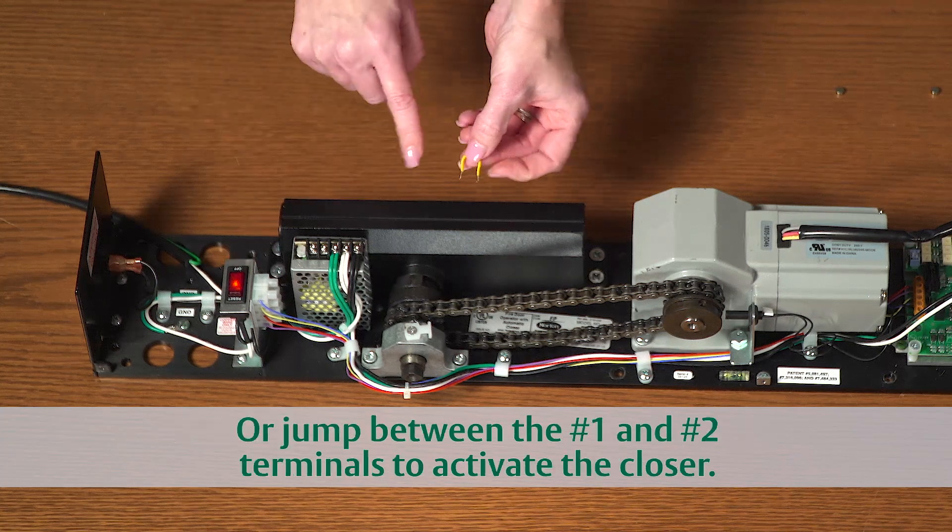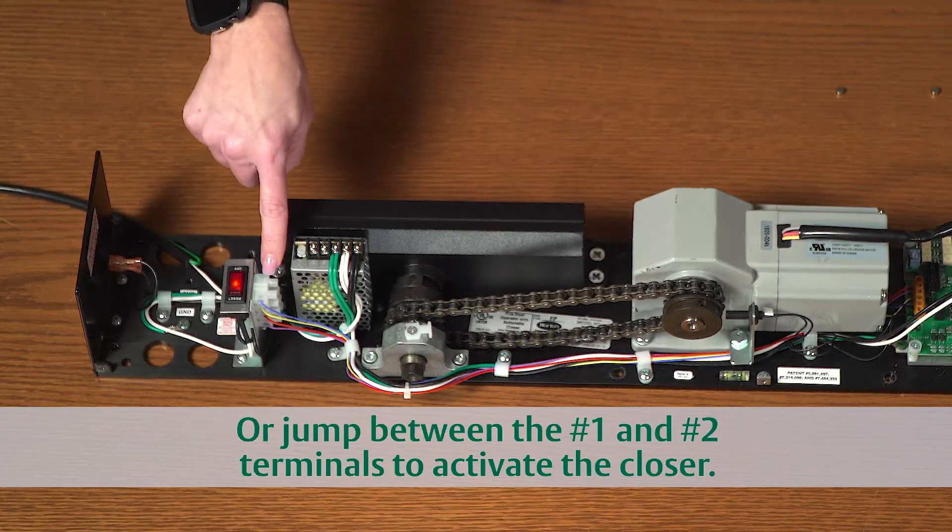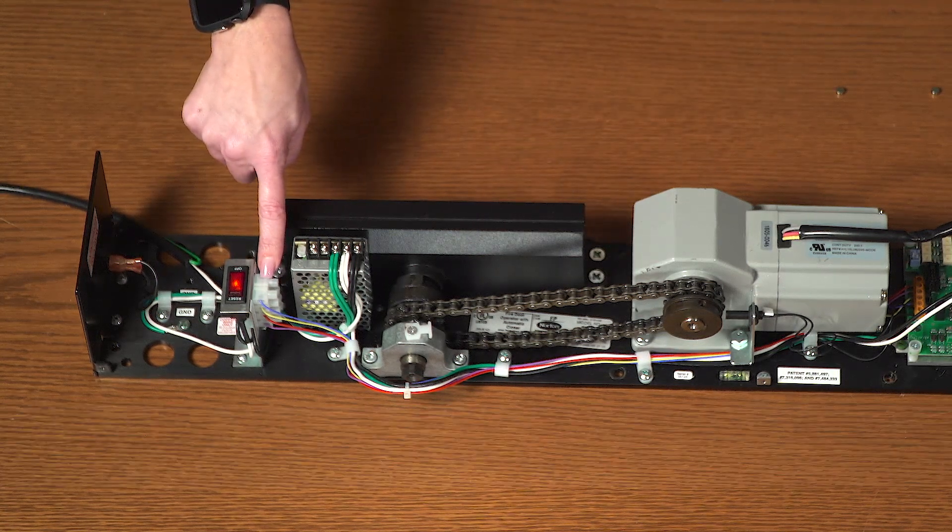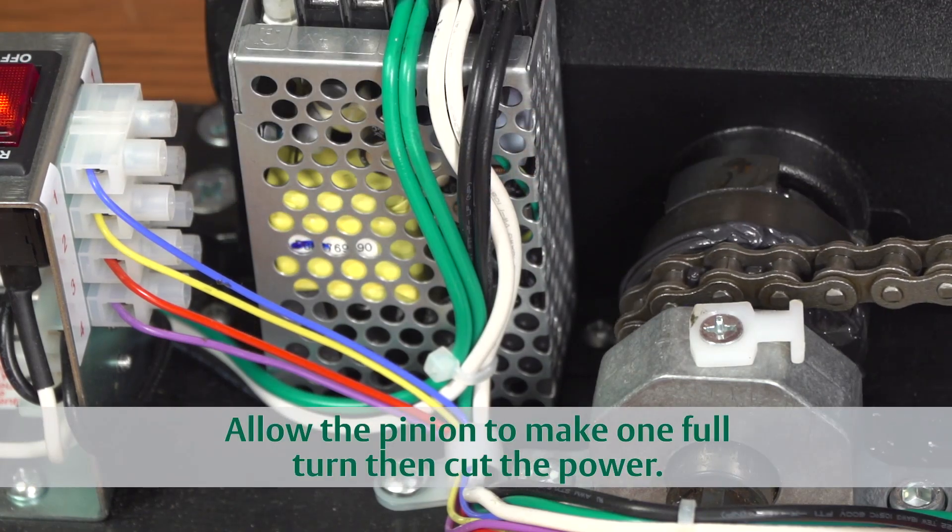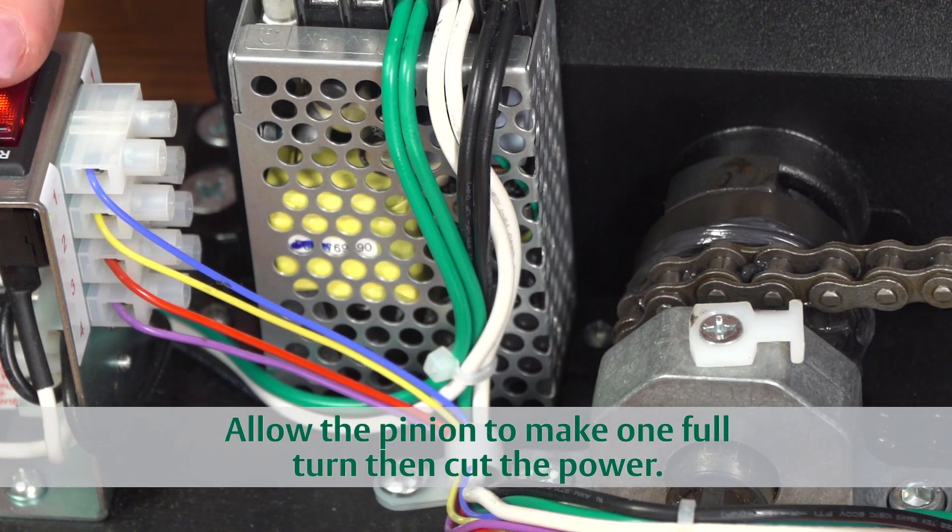If not, take a small jumper wire and jump between the number one and number two terminals on the connection block. Watch the cog as it turns and stop the operator when it makes one full rotation.